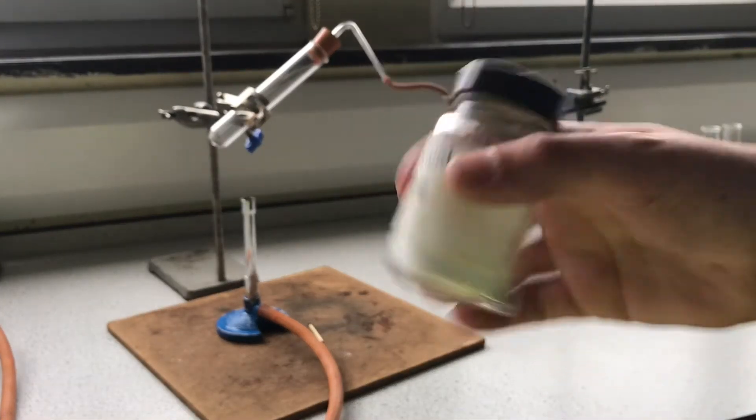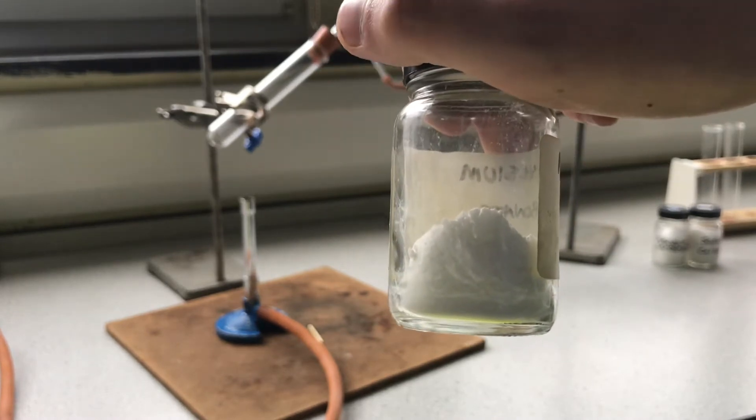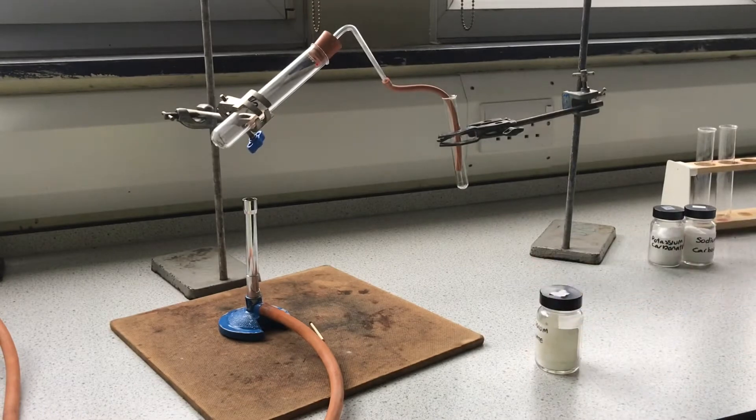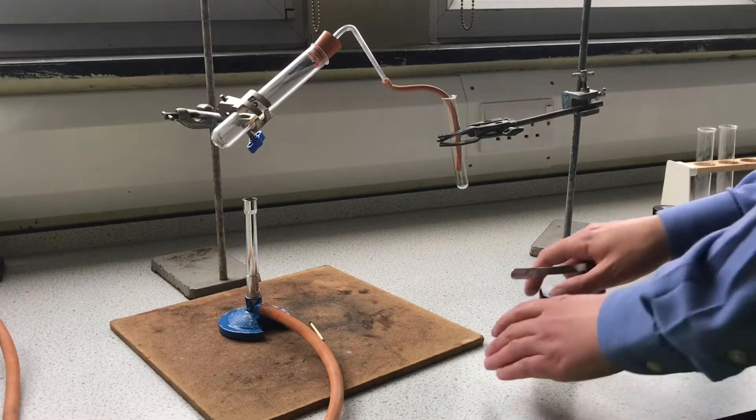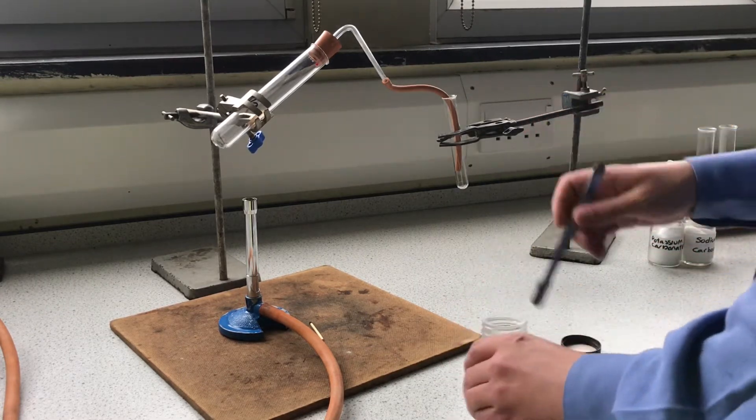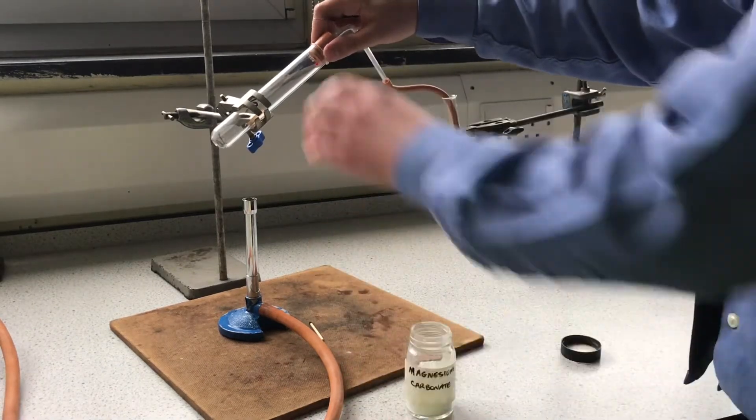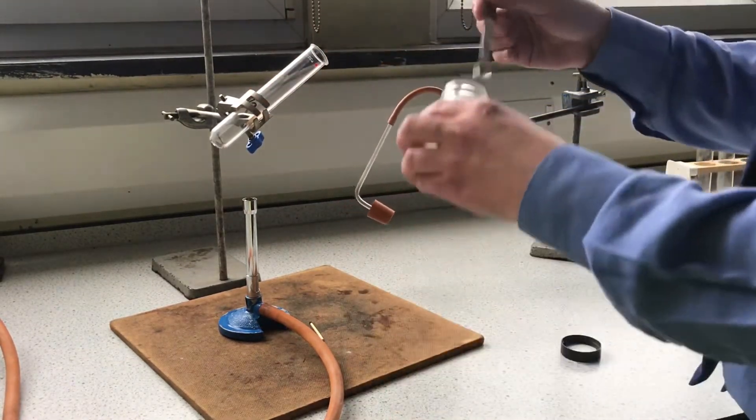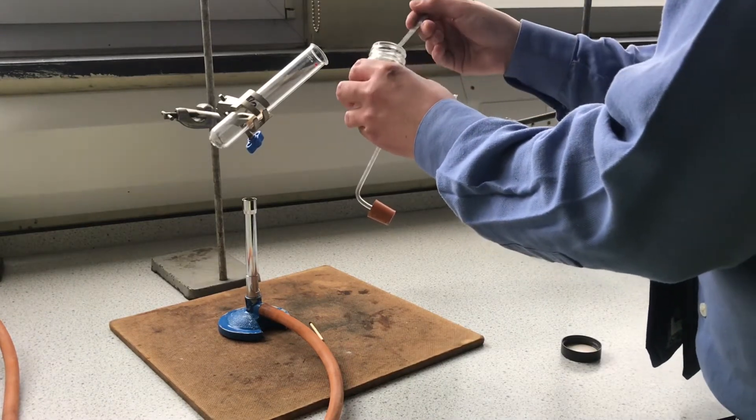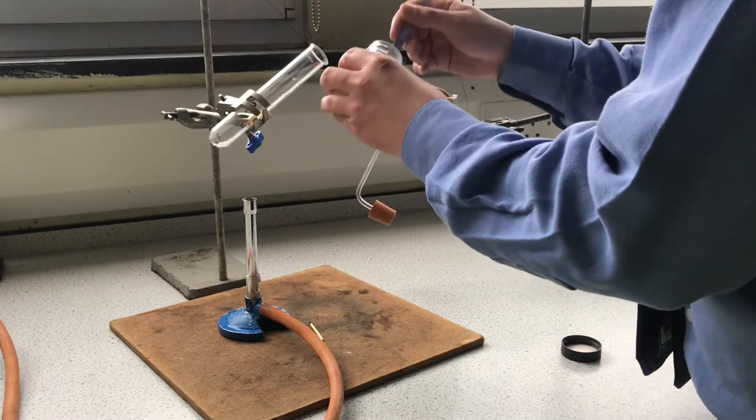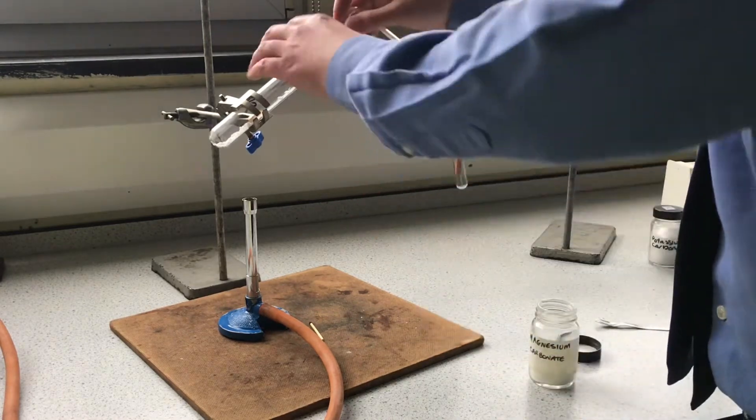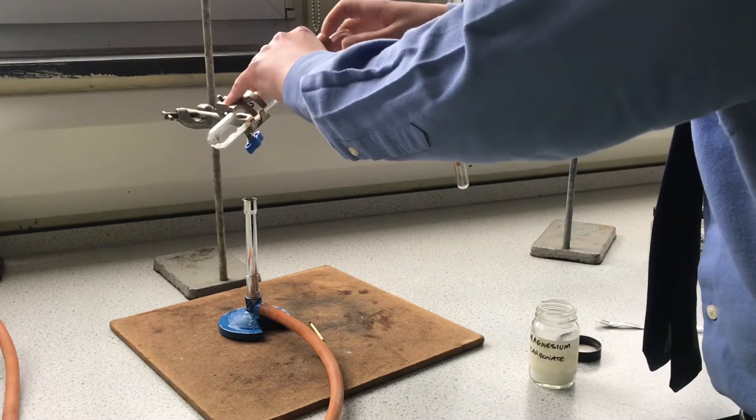The first substance we will be using is magnesium carbonate. As you can see, magnesium carbonate is a white powder. Using a spatula, I will put some magnesium carbonate into my boiling tube. Next step is to close my boiling tube and ensure it is sealed with the rubber bung.